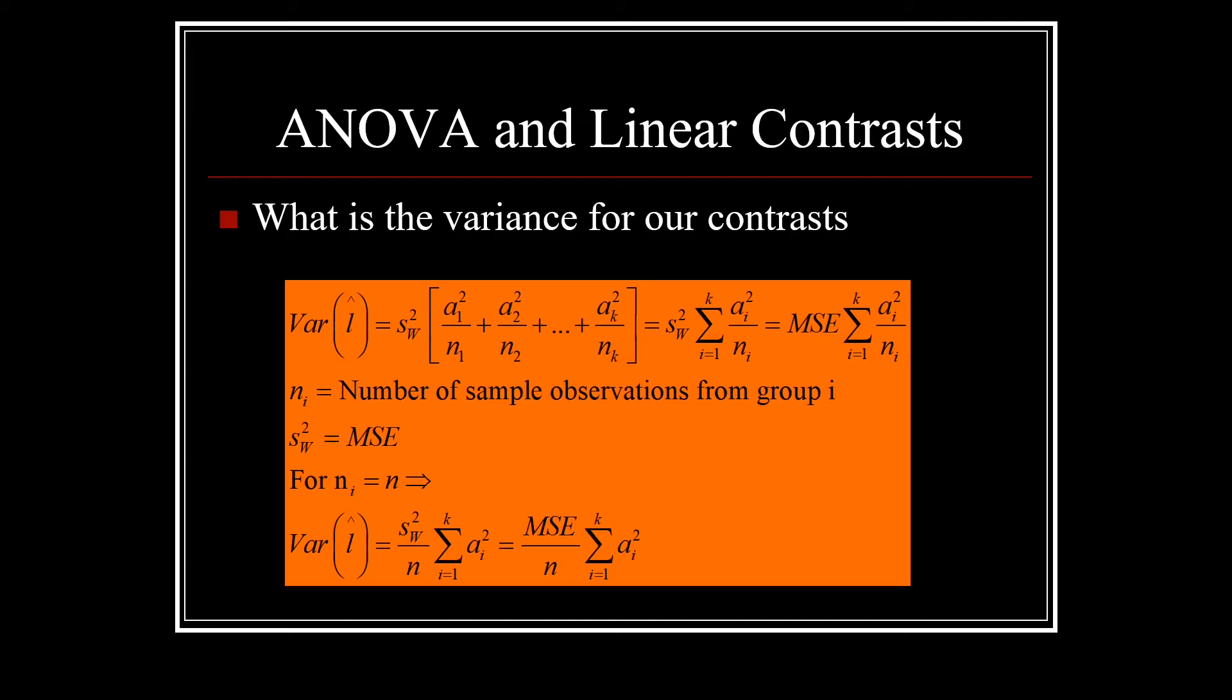We'd also like to have a variance for our contrast. So we'll call l hat our estimate for our contrast. The variance for l hat then is the mean square error times the sum of our a_i squares over n_i. Now, for n_i equal to n, this simply means we have the mean square error divided by n times the sum of the a_i squares.